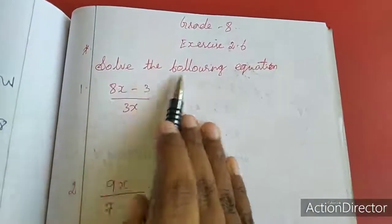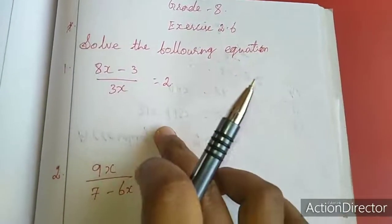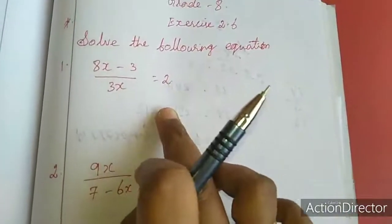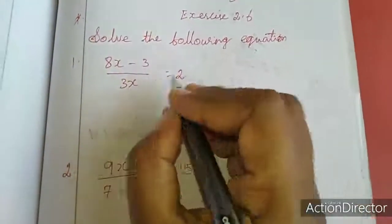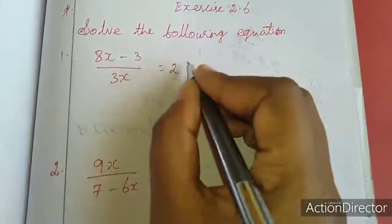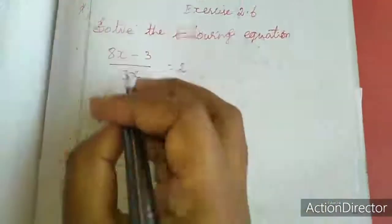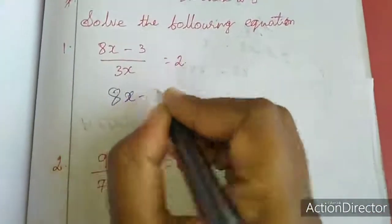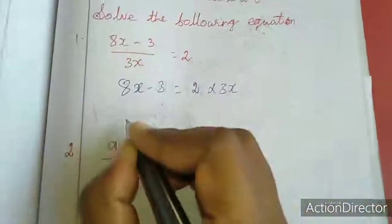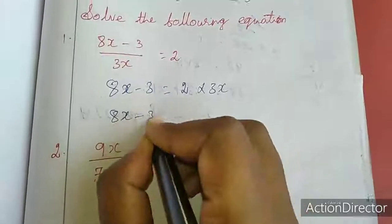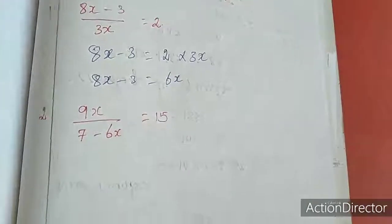The first problem says: solve the following equation. I am going to minimize some steps. You have to find out the value — solve means you want to find out the variable. So you have to multiply on this side. If 3x goes to this side, it comes in multiplication. So 8x minus 3 equal to 2 into 3x, that is 6x. Now you have to solve this equation and find out the answer.